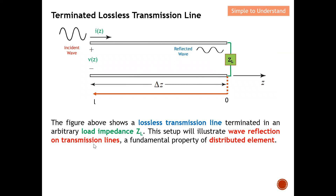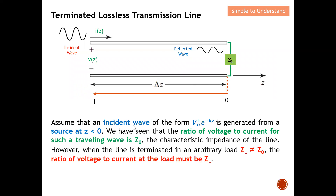What is actually wave reflection on a transmission line? We have an incident wave that propagates along the transmission line. When it reaches the point where there is an impedance mismatch, reflection actually occurs. Impedance mismatch means the characteristic impedance Z0 is not equal to ZL. This is a fundamental property of distributed elements — transmission line is a distributed element because the wavelength of the EM wave is small compared to the length of the transmission line.